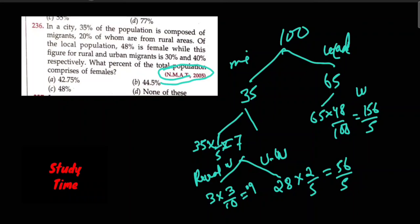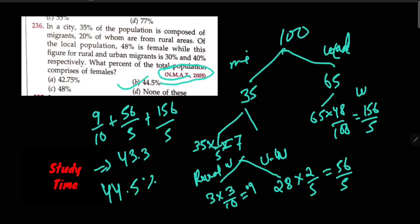Point 4, point 4, point 5. 44.5%, option B is my answer.